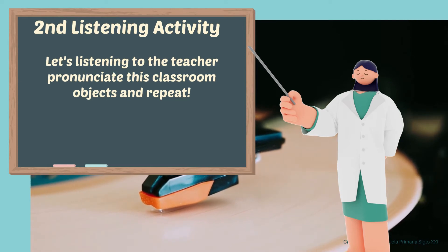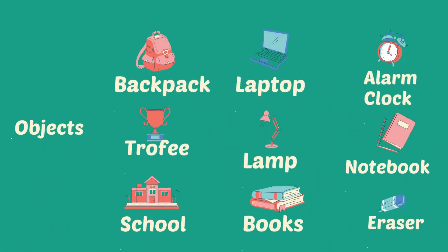This activity is about pronouncing classroom objects. We will have students repeat after us: backpack, trophy. In this one we will make reference to the double-E sounding like a dropped E, and the double-O sounds like 'oo' — so school, books, lamp, laptop, alarm clock, notebook, eraser. The students will repeat after us.